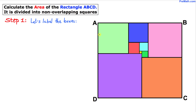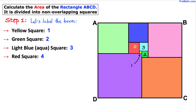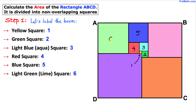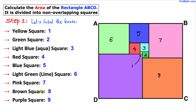Let's go ahead and label these boxes. I'll call this tiny yellow square number one, this green square number two, this aqua blue as number three, this red square as number four, this blue square as number five, this lime green as number six, this pink square as number seven, this brown square as number eight, and finally this purple square as number nine.